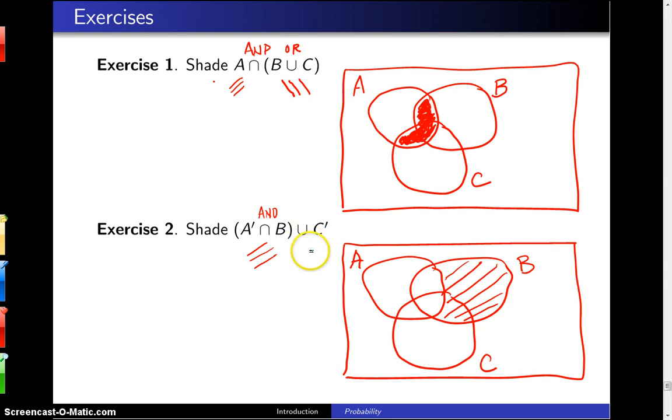Then the next thing we're going to do is find C prime and we'll shade that in this direction. C complement is basically all of the points that are outside of C. So at this point I completely ignore A and B and I draw lines that avoid C like this.